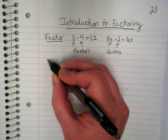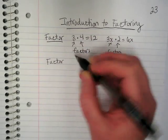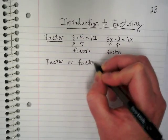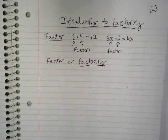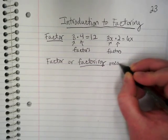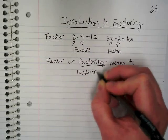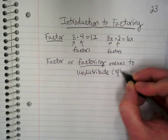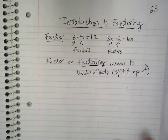So if I ask you to factor something, it has another meaning. Sometimes we say factor or factoring, because the factoring is the action part of it, as you know with that -ing at the end. So factoring means to undistribute. That means that we're splitting it apart, or we divide out what's in common.